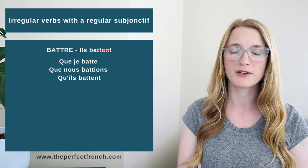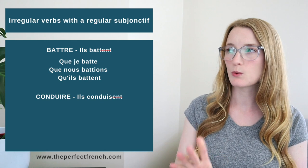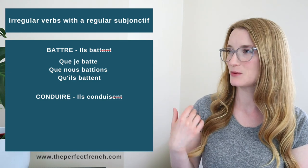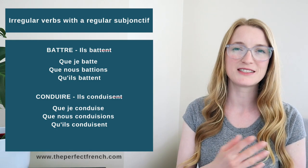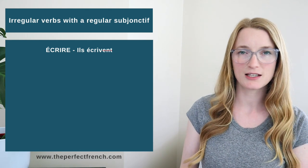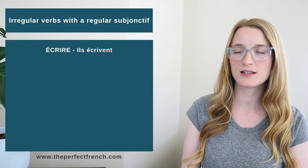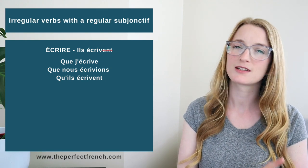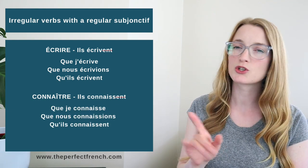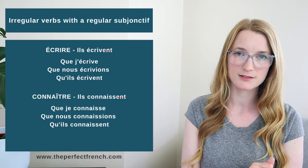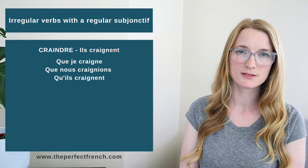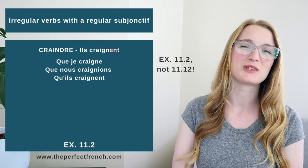You have the list in the book. The one taking an S in the stem — such as conduire: ils conduisent — gives que je conduise, que nous conduisions, qu'ils conduisent. The one that takes a V in the stem — écrire: ils écrivent — gives que j'écrive, que nous écrivions, qu'ils écrivent. And then all the others, such as connaître: ils connaissent — que je connaisse, que nous connaissions, qu'ils connaissent. Craindre: ils craignent — que je craigne, que nous craignions, qu'ils craignent. This one is actually not too bad. When you're ready, do exercise 11.12.